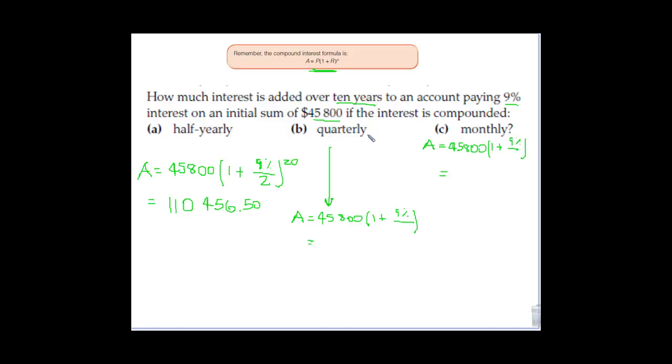So the second one, if it's quarterly, well quarterly means every four times a year, which means that our interest rate we would divide by four. But also it means if we're compounding it four times a year, instead of 10 times, that would now become 40 times that we would compound it over the life of that investment.